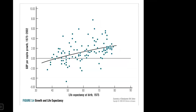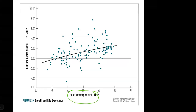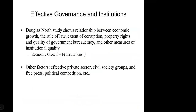Looking at actual data: a chart shows life expectancy at birth on the horizontal axis and GDP per capita growth on the vertical axis — they are positively correlated. Keep in mind that this correlation does not necessarily indicate causality. The increase in life expectancy can be both a cause and a consequence of GDP per capita growth, following the discussion from the previous slides.